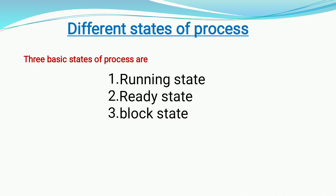Process control block is created when the user creates a process and it is removed when the process is killed. The three basic states of a process are running state, ready state, and block state.